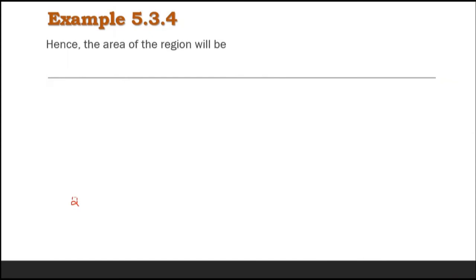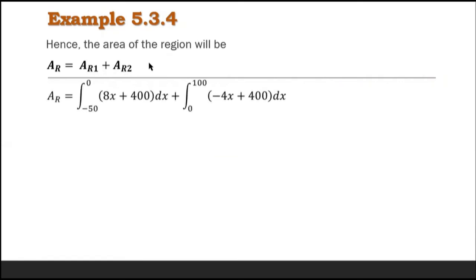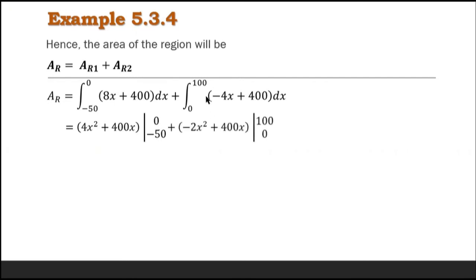The total area of the region is A_R equals the area of sub-region 1 plus the area of sub-region 2. This equals the definite integral of (8x + 400) dx from negative 50 to 0, plus the definite integral of (negative 4x + 400) dx from 0 to 100. Taking anti-derivatives: for R₁ we get 4x² plus 400x evaluated from −50 to 0; for R₂ we get negative 2x² plus 400x evaluated from 0 to 100.